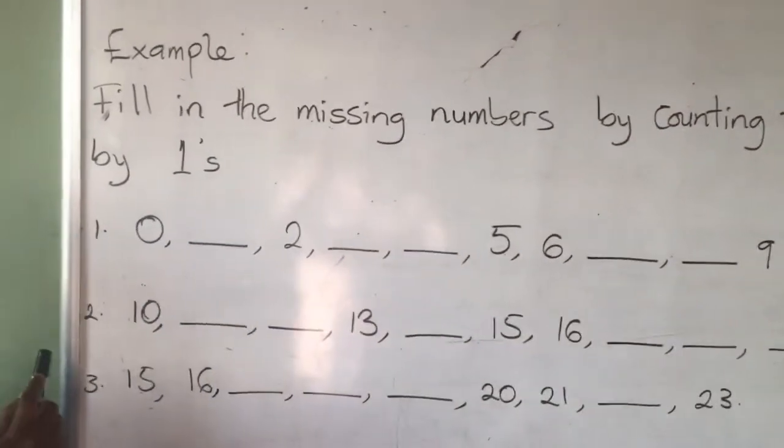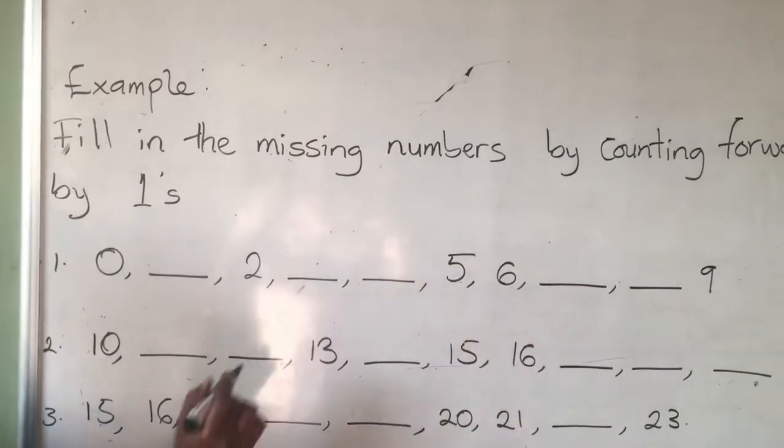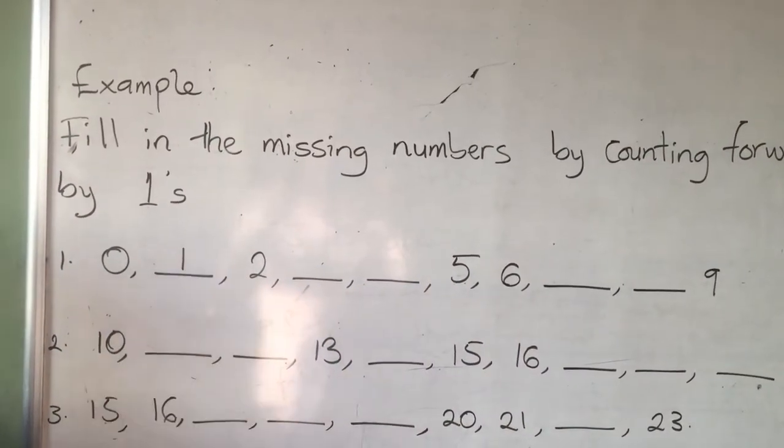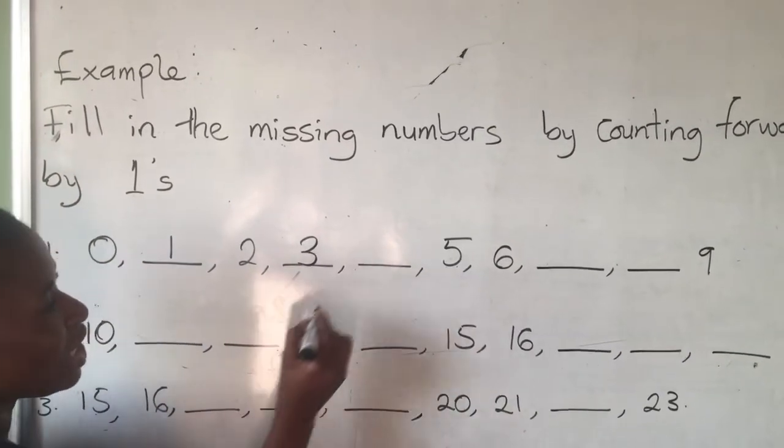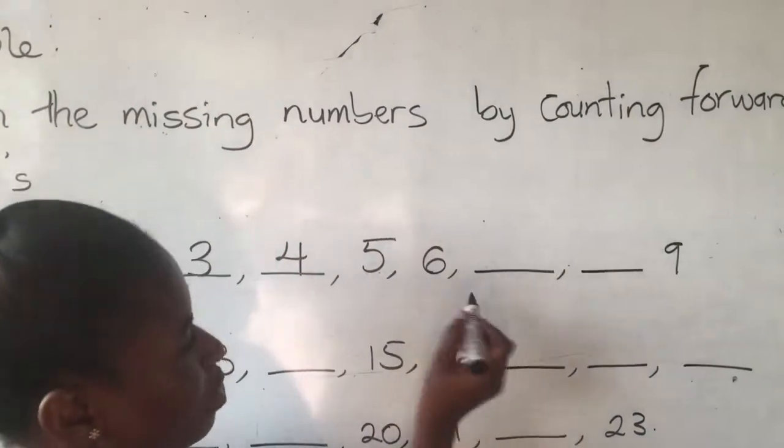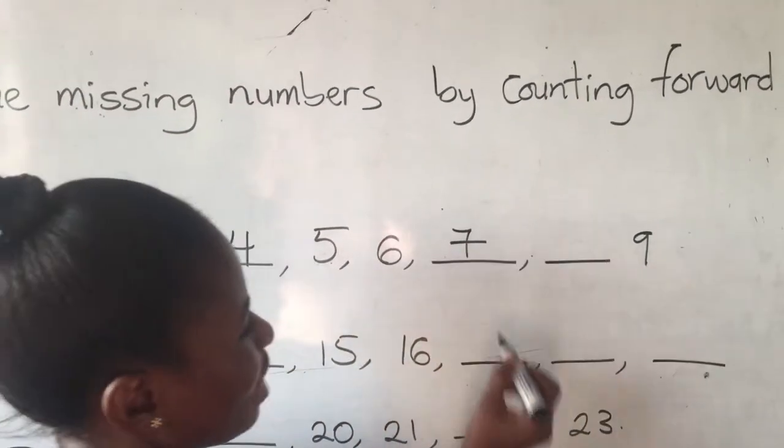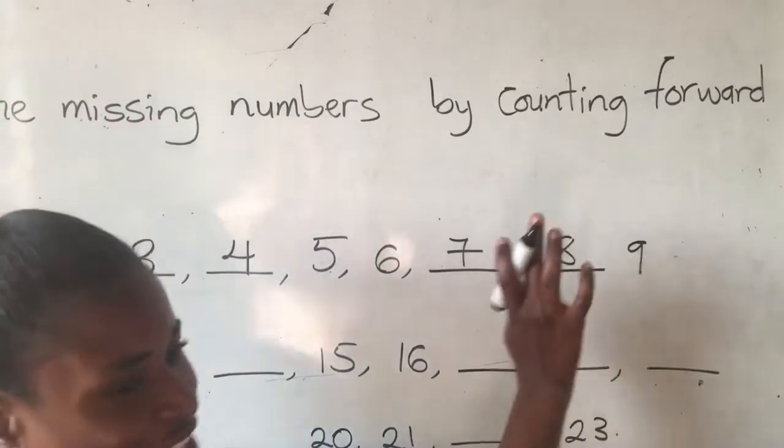Example 1, we are starting from what? 0. Now from 0, we are counting forward. So we go towards 1, and then we have what? 2. From 2, we move towards 3 and then 4. We have 5, 6, then we move towards 7, 8, and then we have 9 here. So it ended at 9.